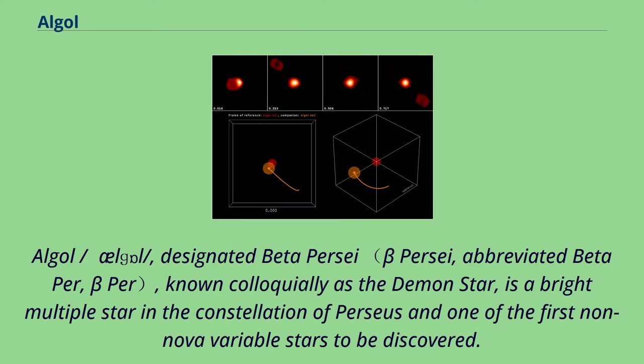Algol, designated Beta Persei, known colloquially as the Demon Star, is a bright multiple star in the constellation of Perseus and one of the first non-nova variable stars to be discovered.